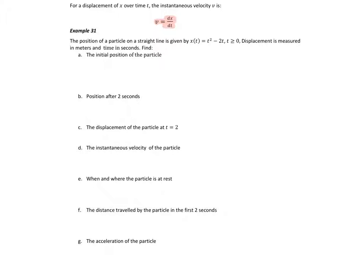The position of a particle on a straight line is given by x(t). If I sketch this graph, the intercepts are at 0 and 2. So there's my x(t) graph. From symmetry we know the turning point is at t = 1. Putting t = 1 in: 1 squared minus 2 gives negative 1. The initial position of the particle — initial anything — is x(0), which is equal to 0.